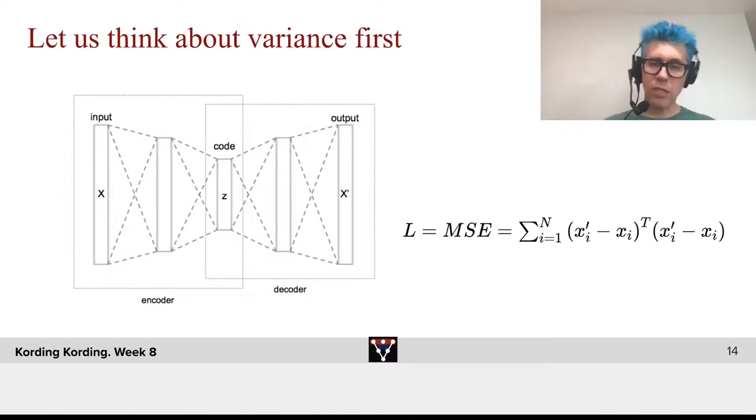We might first want to consider variance here. The loss is the mean squared error, which is the sum over all the dimensions of the images, of x_i prime, which is the output here, minus x_i.